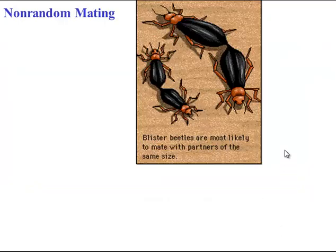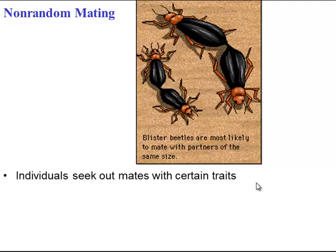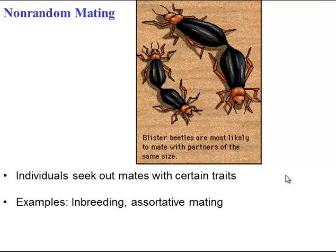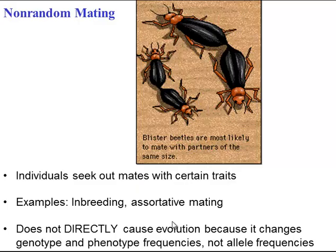Non-random mating is technically not a force of evolution, but it can indirectly lead to evolution. With non-random mating, individuals show preference for certain mates — for example, small beetles prefer small beetles, or inbreeding occurs where family members prefer other family members. This doesn't cause evolution because it won't change allele frequencies; it will only change genotype and phenotype frequencies. The alleles get reshuffled differently, but the alleles themselves don't change.